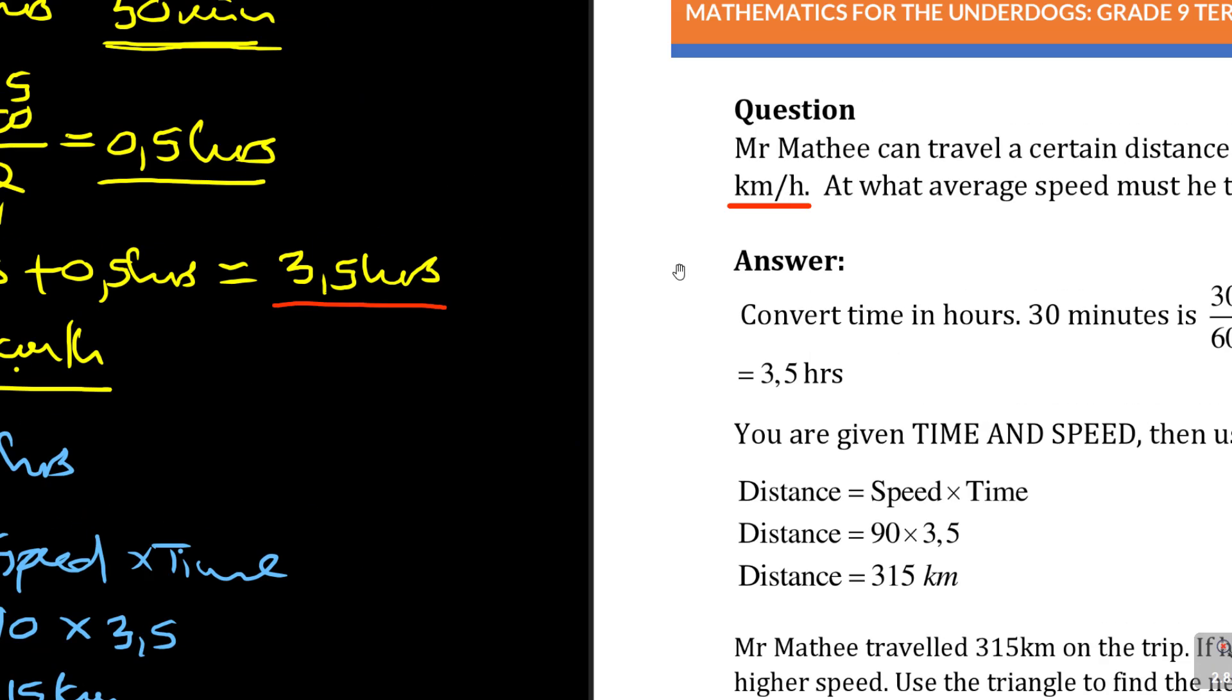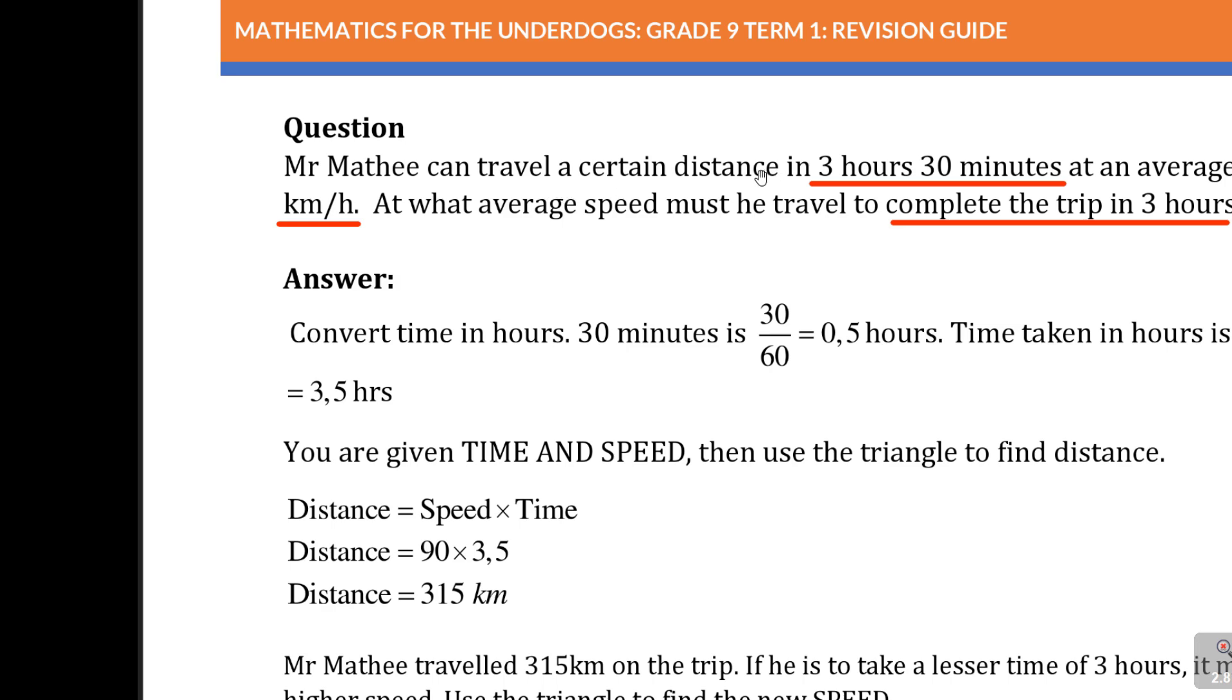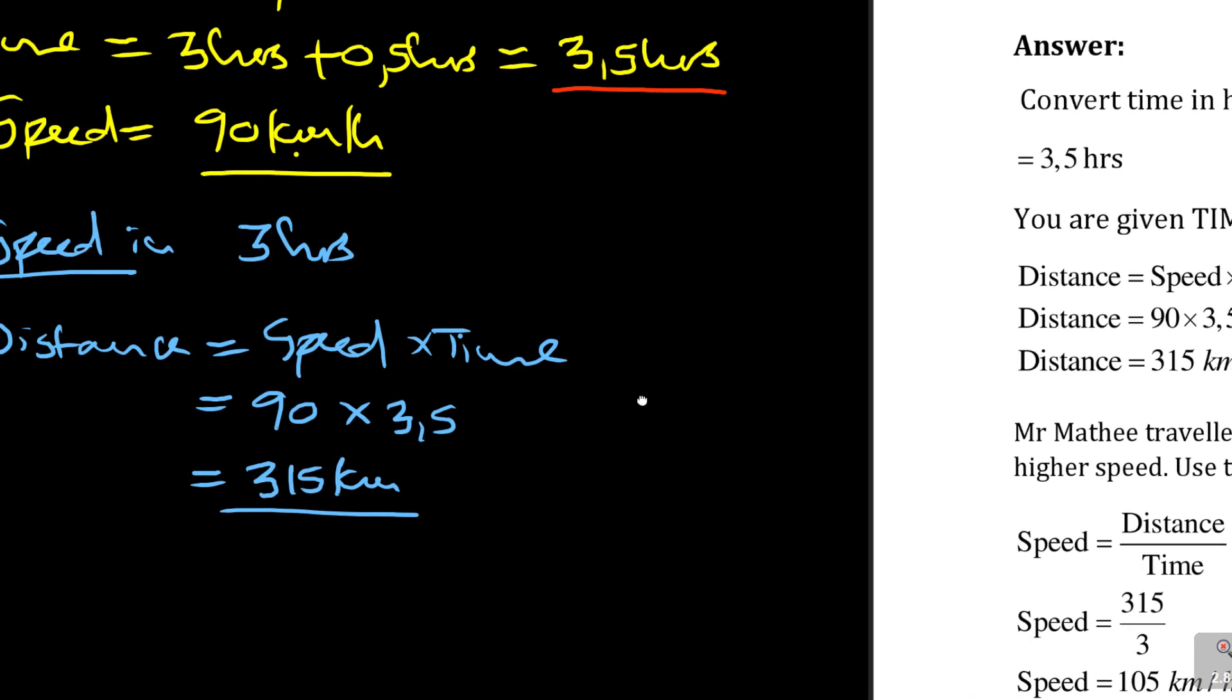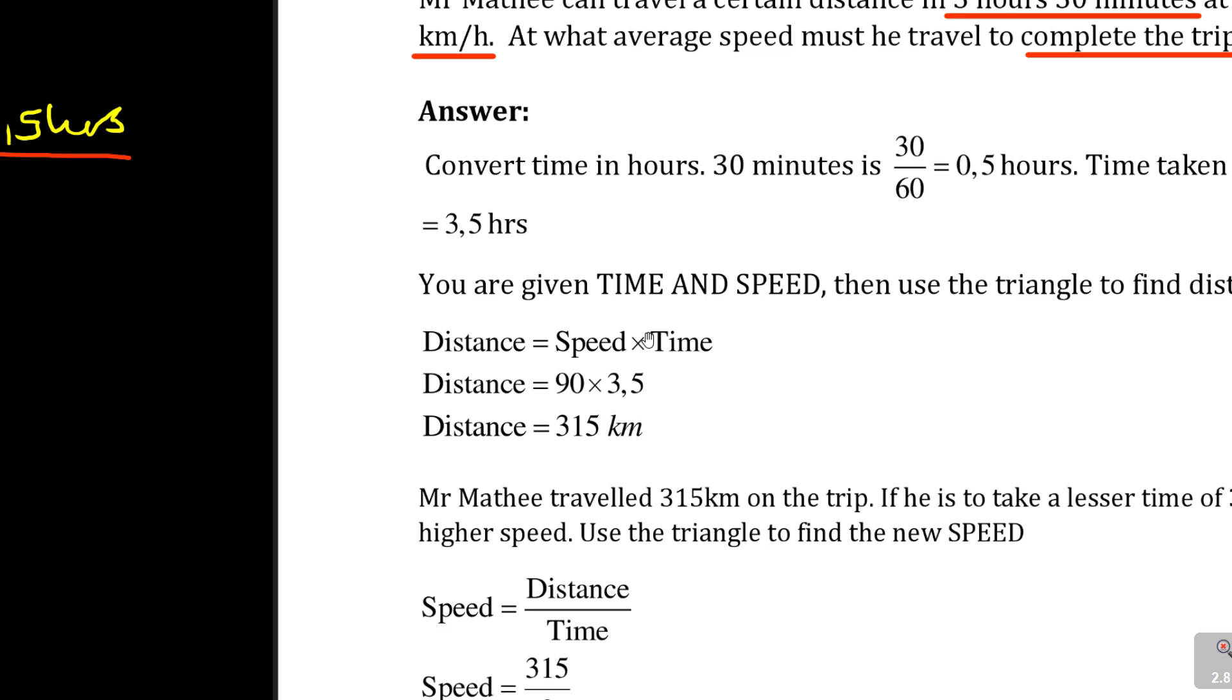So it's 90 times 3.5 equal to 315. That certain distance is 315. Remember the distance we measure in kilometers. We know now that distance he traveled is 315 kilometers.